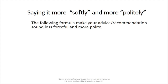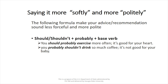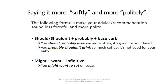The following formula can help you make your advice or recommendation sound less forceful and more polite. You can use 'should' or 'shouldn't' plus 'probably' plus the base verb, like in these examples: 'You should probably exercise more often — it's good for your heart,' or 'You probably shouldn't drink so much coffee — it's not good for your baby.'